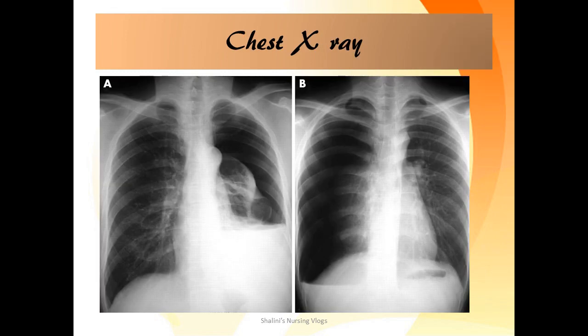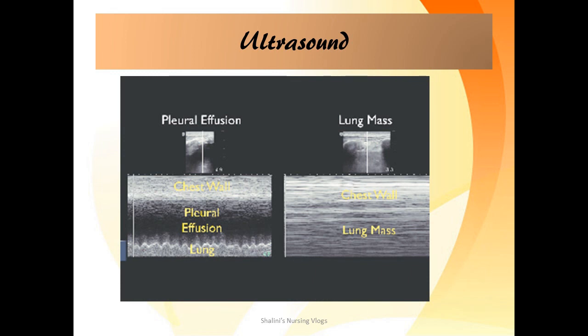Chest X-ray is one way to get closer to your clinical diagnosis. If you look at the picture on the left, the costophrenic angle of both lobes is clear, but on the right, one costophrenic angle is obscured, indicating effusion. On ultrasound, dark fluid collection between the chest wall and the lung indicates pleural effusion, while linear repeating lines indicate a solid lung mass.